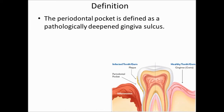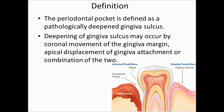A periodontal pocket can be defined as a pathologically deepened gingival sulcus. This deepening of the gingival sulcus may occur coronal to the gingival margin or apical to the gingival margin. You can see in this diagram — on the healthy side, the gum fits snugly around the neck of the tooth, like the collar of a shirt that fits around the neck.